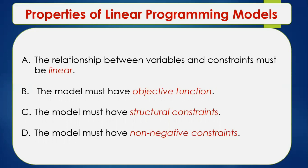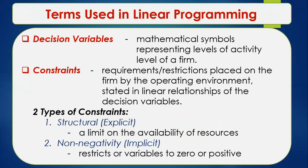To better understand these properties, let's discuss the terminologies used in linear programming. One key term is decision variables — mathematical symbols representing levels of activity of a firm. These can be variables A and B, X and Y, or X-sub-1 and X-sub-2, Y-sub-1 and Y-sub-2.